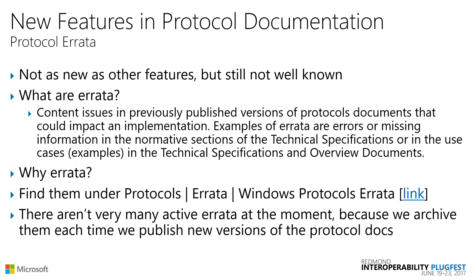If you look today there aren't very many — only five or six published last week — because we archive them periodically. Anytime we publish a new version of a Windows Protocol document, we archive the active errata associated with that document. We do this so that live errata don't become extremely lengthy and cumbersome, but more importantly because when we publish a new document version it by definition incorporates all the changes previously published as errata. It would be confusing to keep those in active errata format. They are stored on Azure and we provide links to past errata in PDF format, so you're always welcome to refer to those.